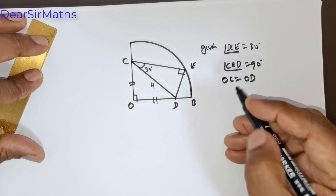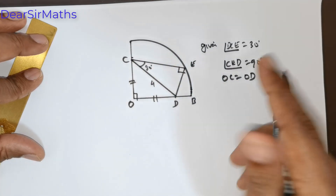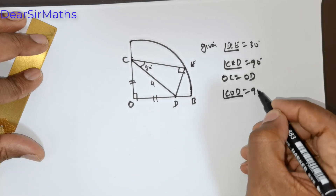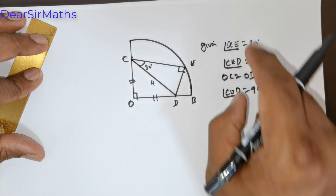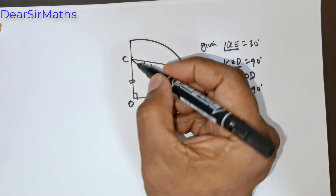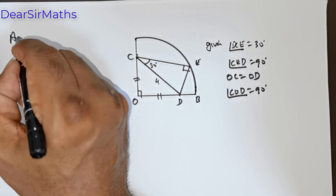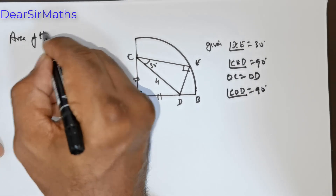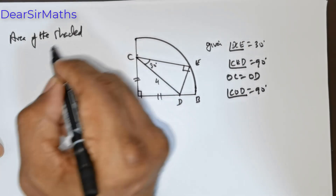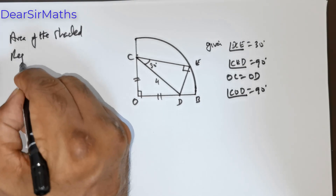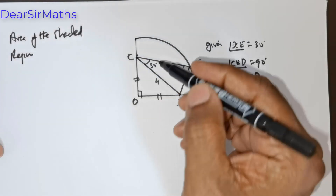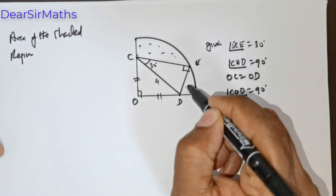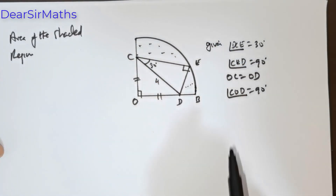We are given OC is equal to OD, so both sides are equal. And COD is 90 degrees. We are expected to obtain the area of the shaded region.